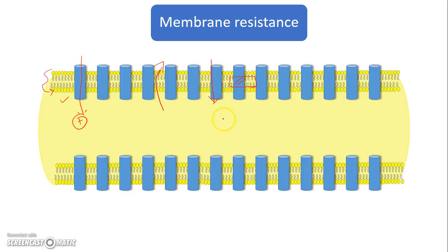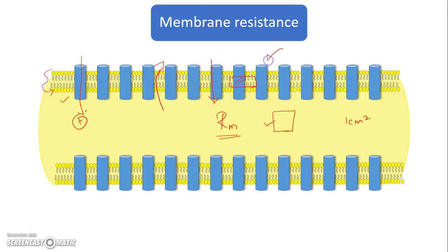The term specific membrane resistance is used, denoted by capital RM, which denotes the membrane resistance per unit surface area of the membrane — that is, how much membrane resistance there is per one centimeter squared. This actually depends only on the number of voltage-gated ion channels present on the membrane. If the voltage-gated channel concentration is higher, then the specific membrane resistance becomes much lower.